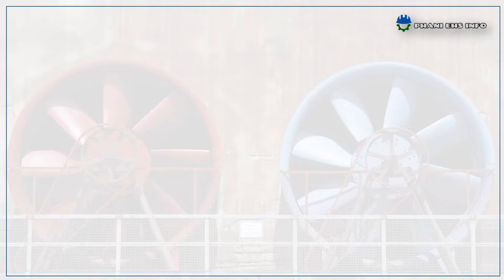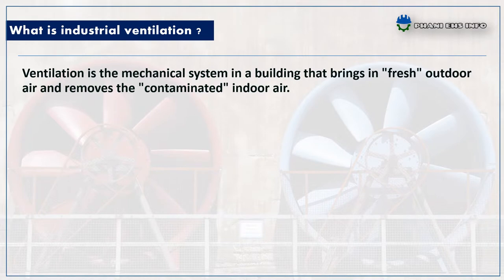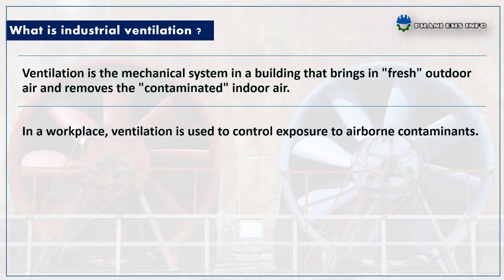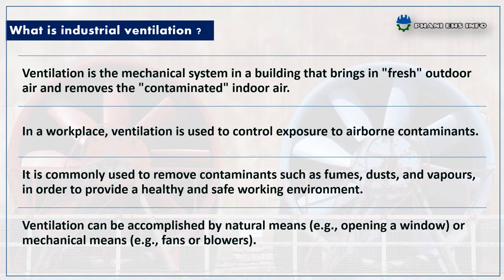First of all, what is industrial ventilation? Ventilation is the mechanical system in a building that brings in fresh outdoor air and removes contaminated indoor air. In a workplace, ventilation is used to control exposure to airborne contaminants. It is commonly used to remove contaminants such as fumes, dusts, and vapors in order to provide a healthy and safe work environment. Ventilation can be accomplished by natural means, such as opening a window, or mechanical means, such as fans or blowers.